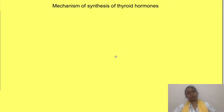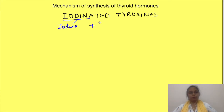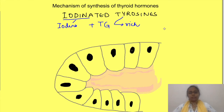Now let's see the concepts on mechanism of synthesis of thyroid hormones. Thyroid hormones are iodinated tyrosine, which is an amino acid. The thyroid gland synthesizes these hormones from two substrates: the ion iodine, and the protein thyroglobulin, which is a tyrosine amino acid-rich protein. This protein is synthesized by the epithelial cells lining the thyroid follicles and is stored in the colloid.